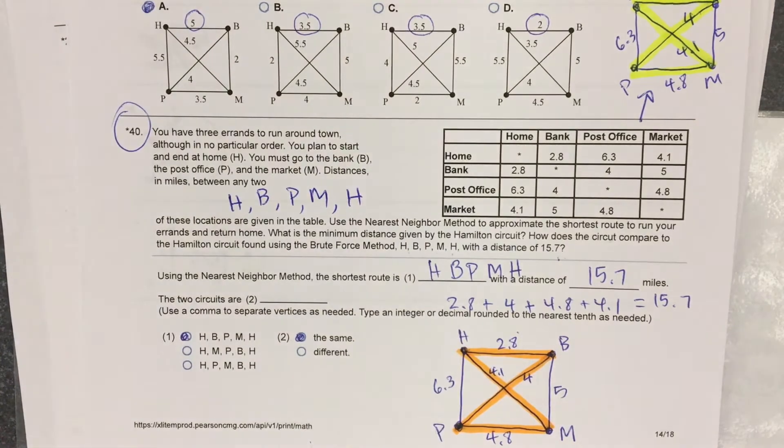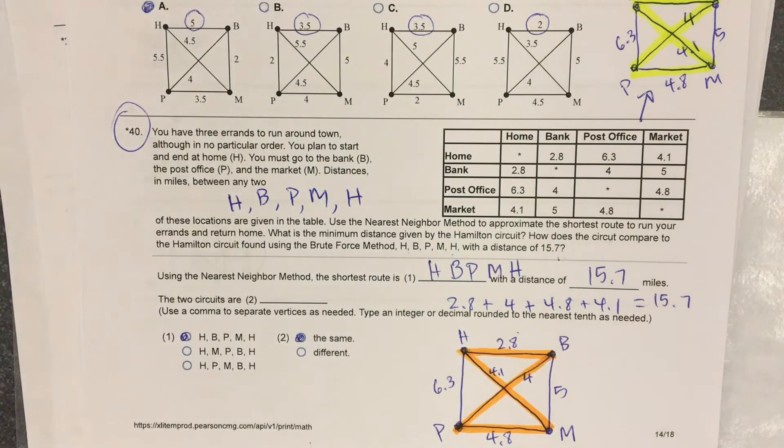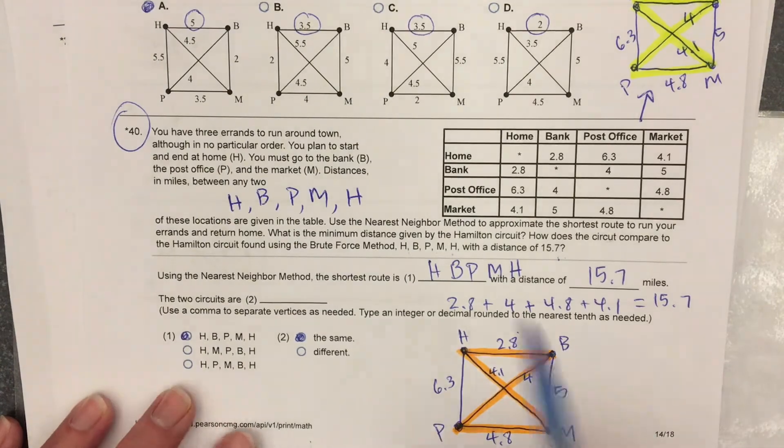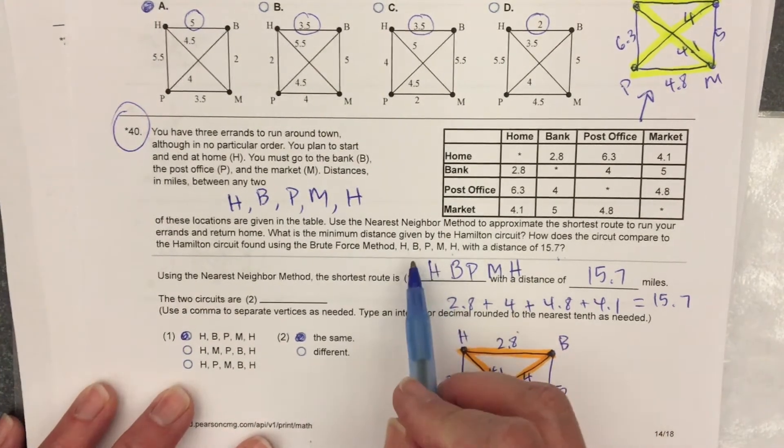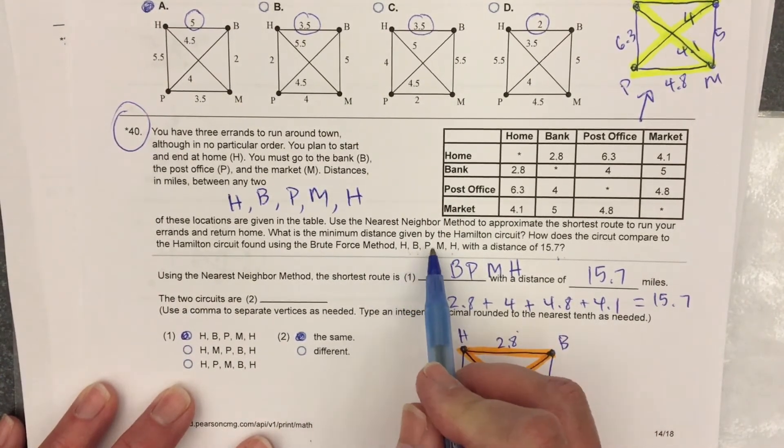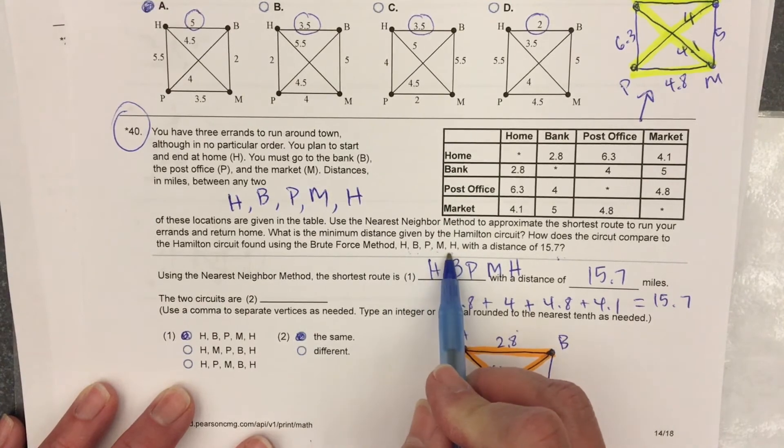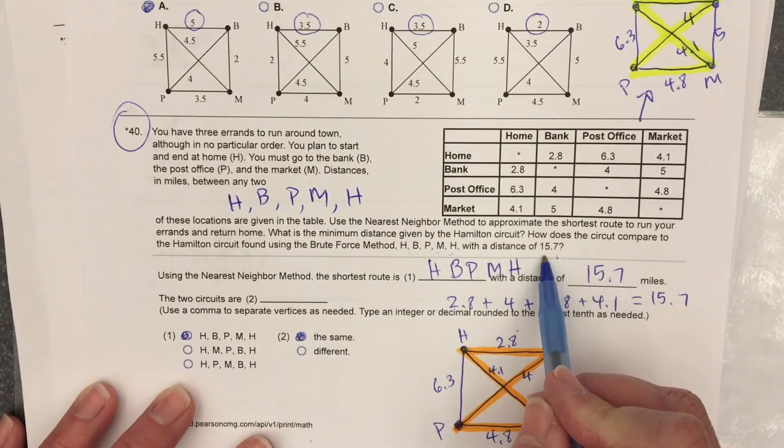If you continue reading the problem, they said now the author has done this problem using brute force, which is finding every possible Hamilton circuit and finding the smallest. Using brute force, they found that the smallest was home, bank, post office, market, home, with a distance of 15.7.